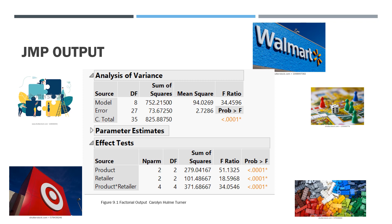Here's our output. First we want to test for interaction. You'll go under the effects test beneath the analysis of variance. You see the factors product, retailer, and the cross of product and retailer — that's your interaction term. You go to the F statistic, 34.05, which has a p-value less than .0001. Therefore, we'll reject H0 and decide there is interaction.